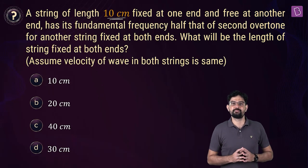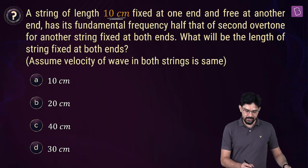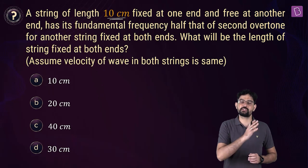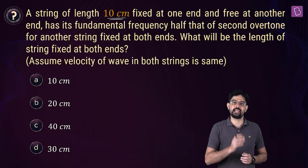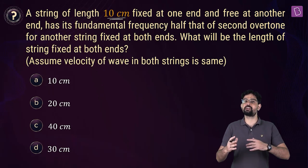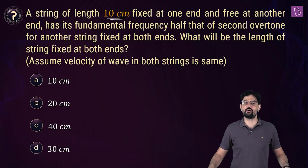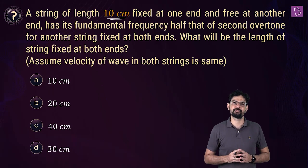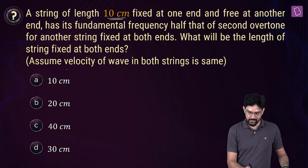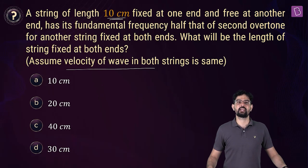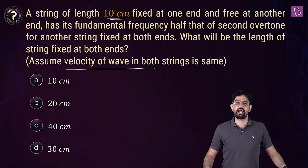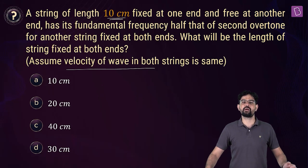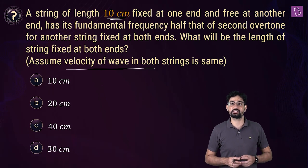The fundamental frequency of the first string (fixed at one end) is given to be 1/2 of the frequency of the second overtone for the string whose two ends are fixed. The velocity is the same in both strings, and we have to find the length of the string fixed at both ends.